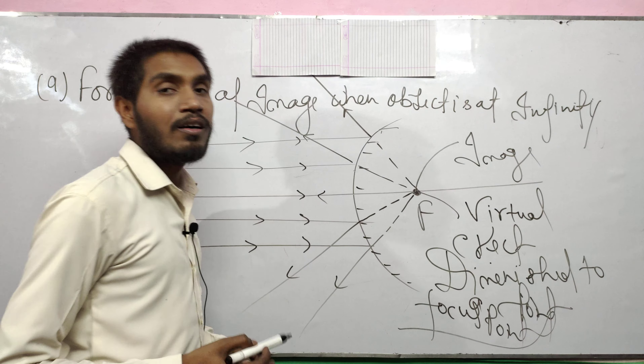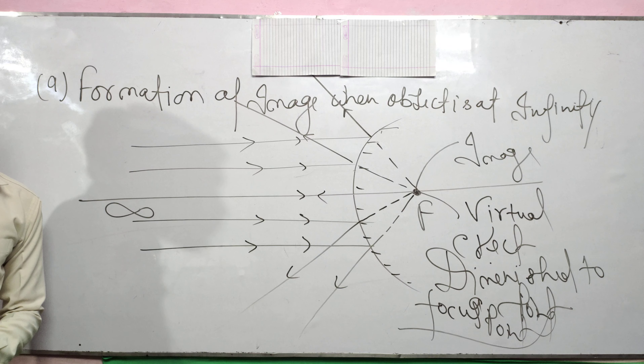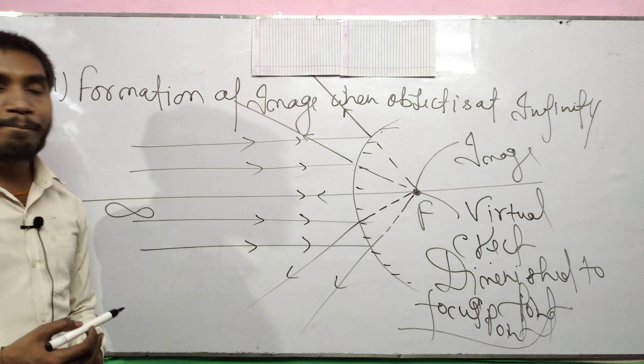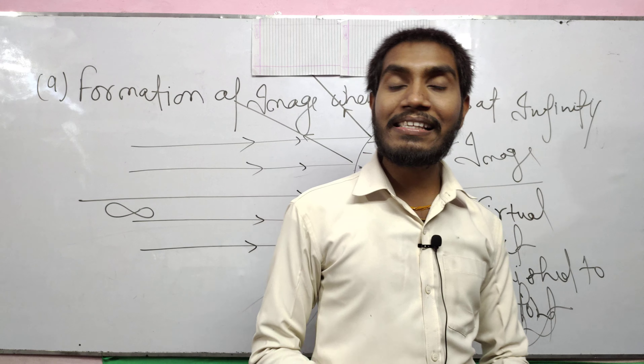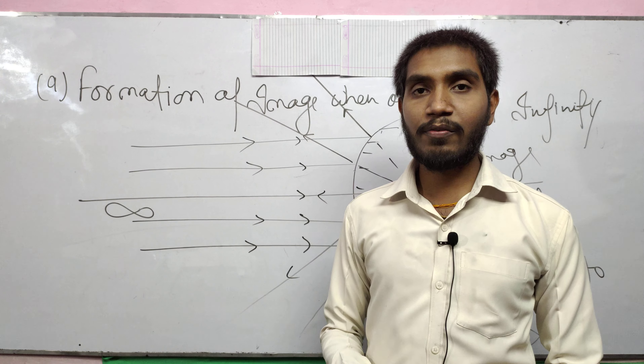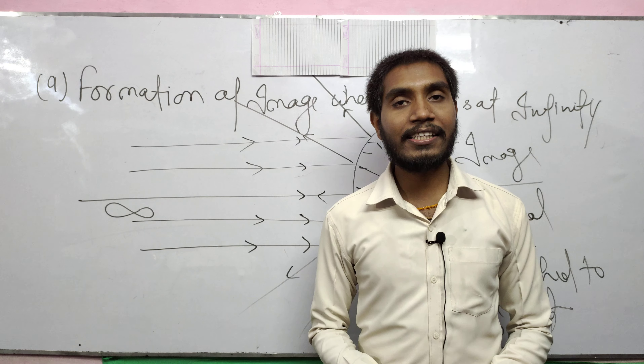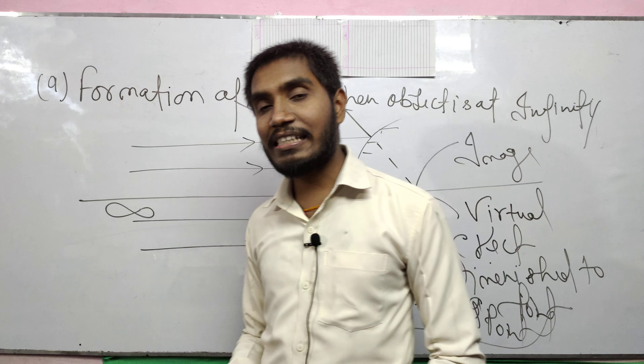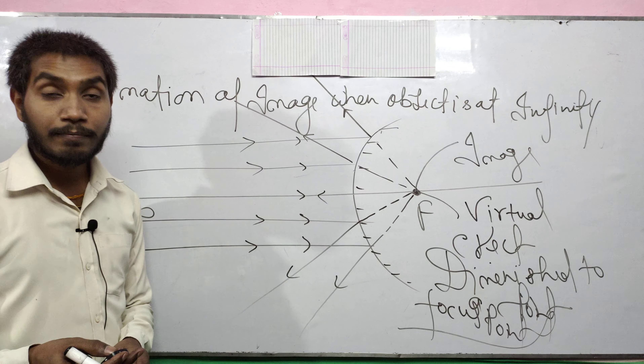The image is located behind the mirror, at the focus point. So this is the location and nature of the image in a convex mirror when the object is situated at infinity. Let's meet in the next video. Goodbye.